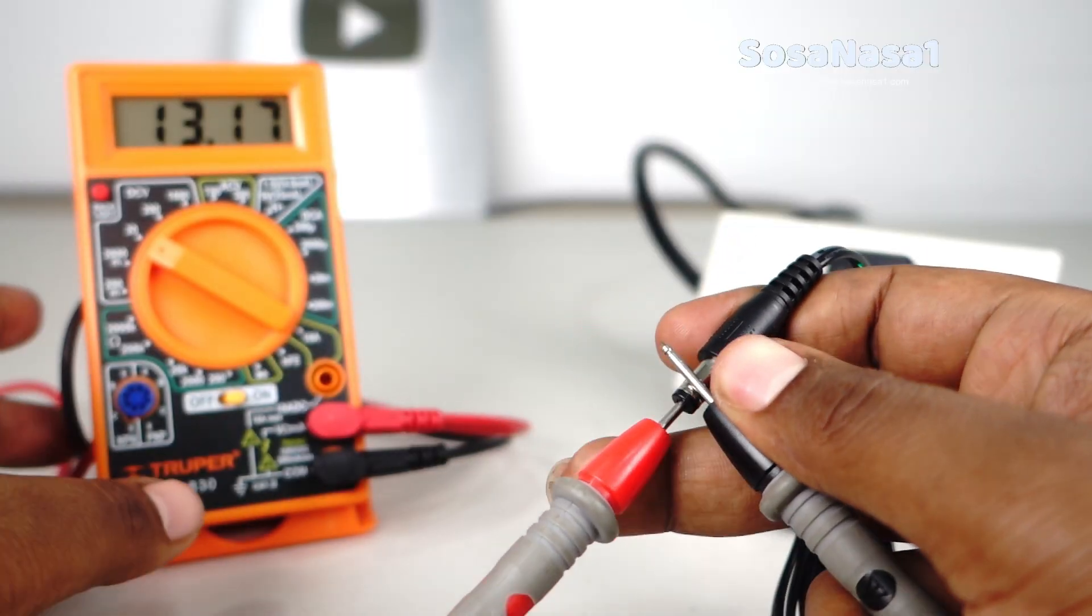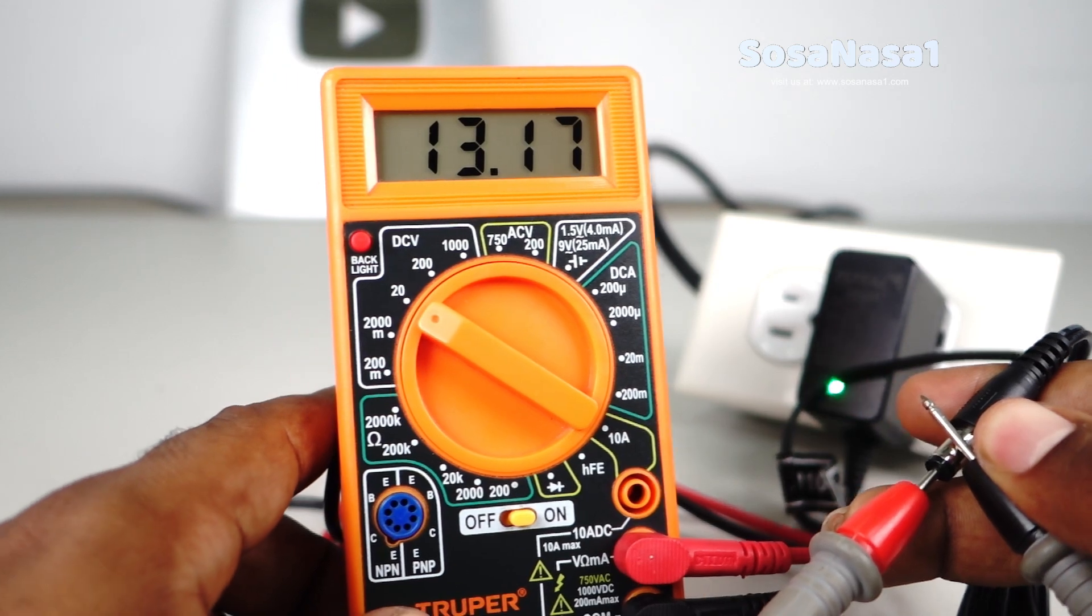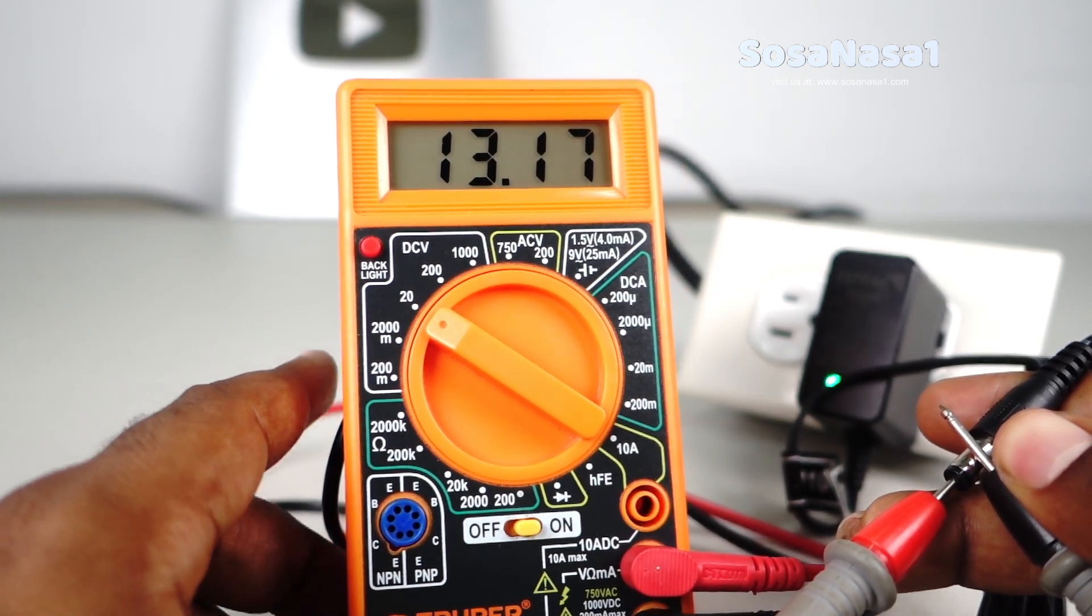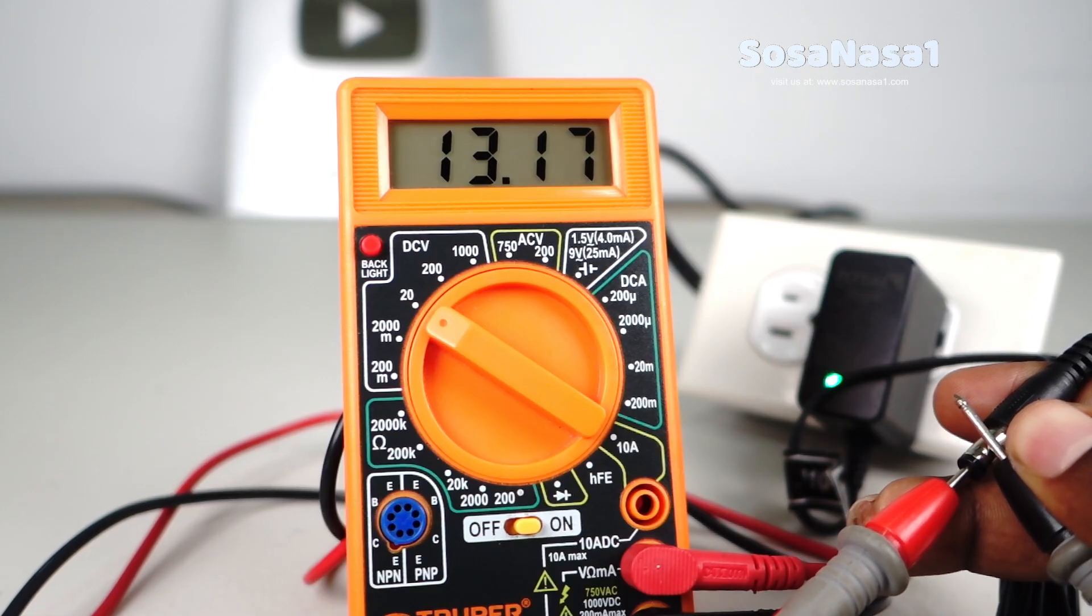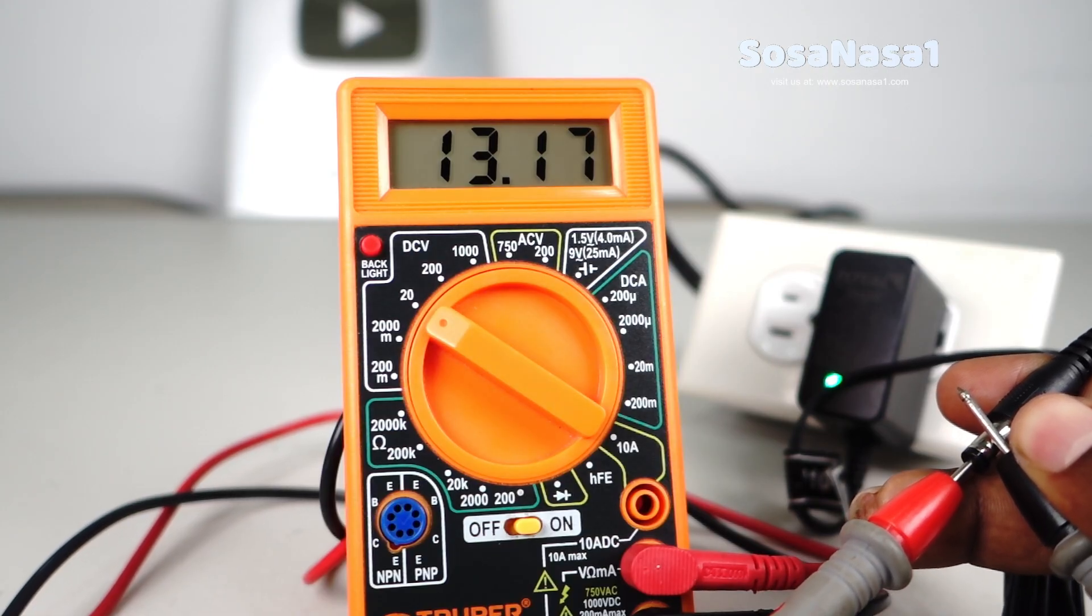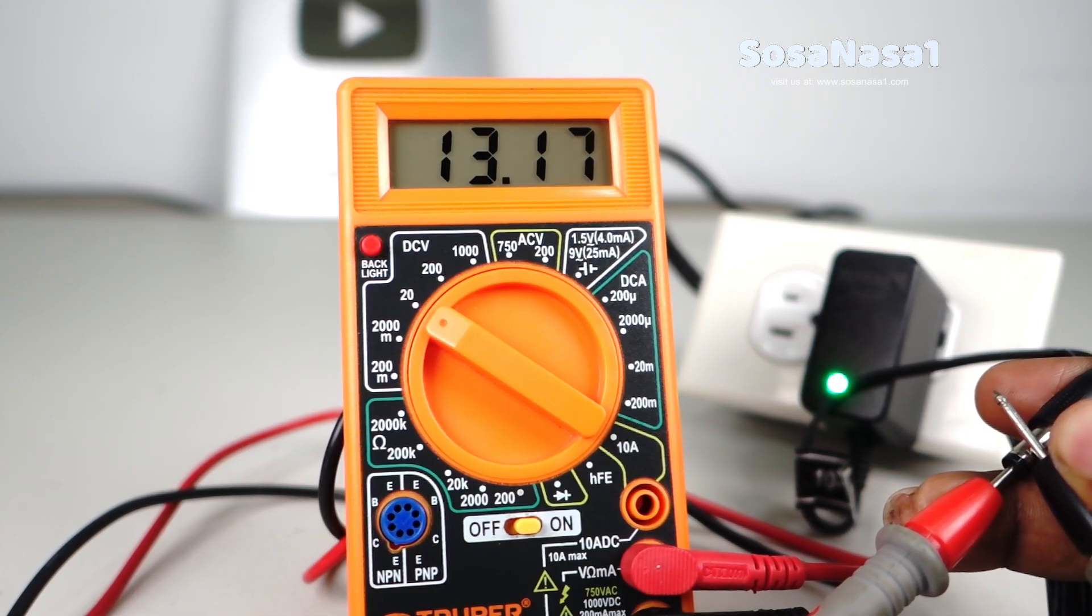And now watch the digital multimeter screen. In this case, we are watching 13.17 volts. This number is very close to 12 volts. This means this charger is working correctly.